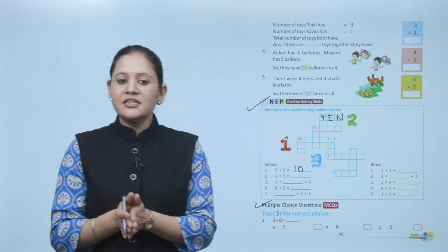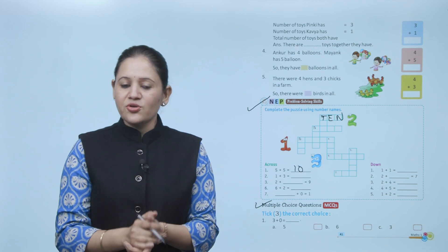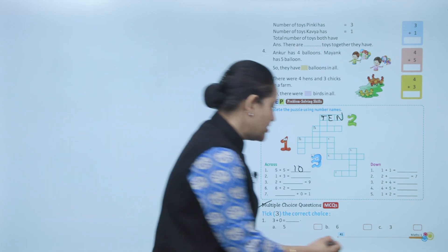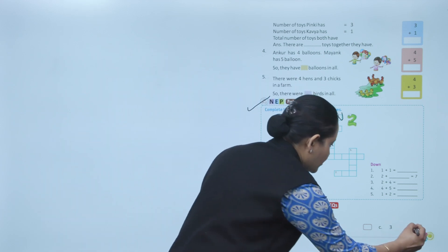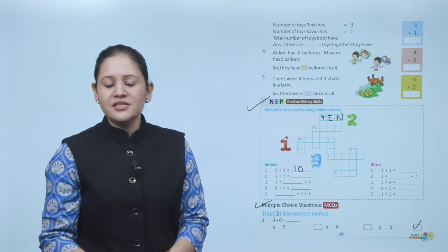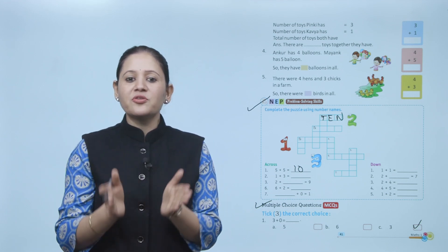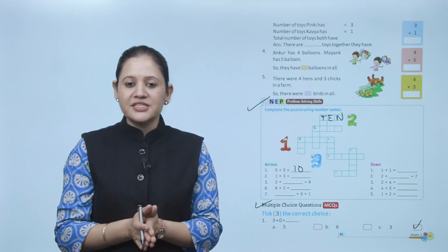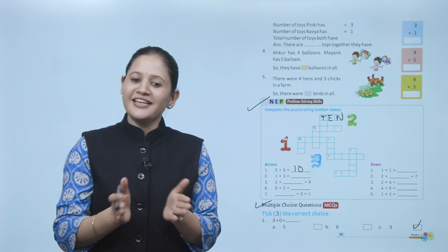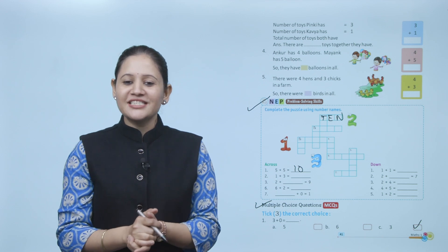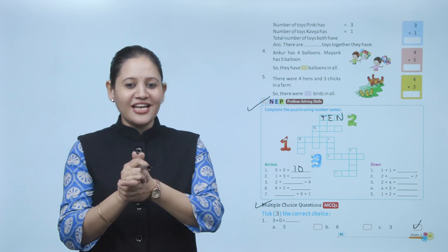Next is the multiple choice question. Three plus zero equals — option C, three, is the correct answer. You have to practice all the questions of this chapter. Here we end the chapter — I hope you understood it well. Now you have to practice.